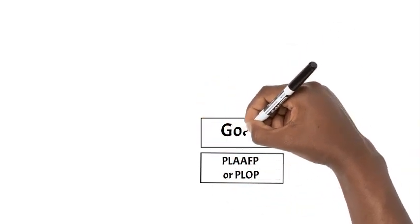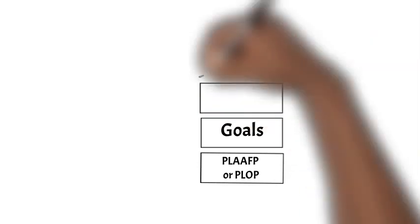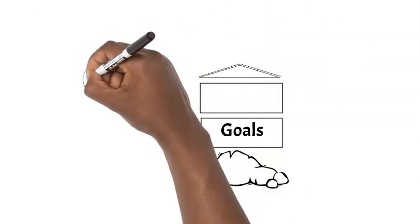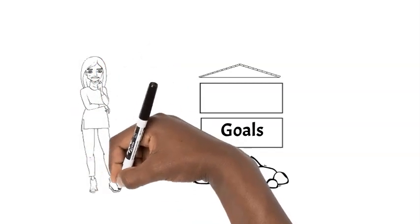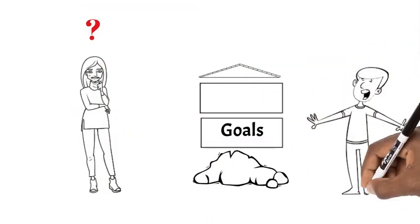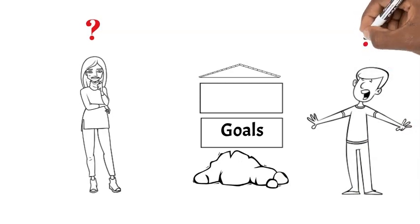It is important to note that each step is based on the others, so it's important not to skip over any of the components. You can't establish goals without knowing where the student is, and it wouldn't make sense to describe what services and support they need if we haven't described their needs accurately, right?